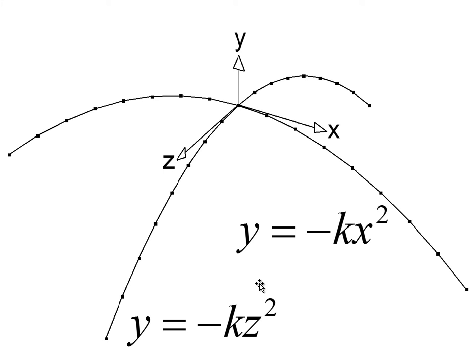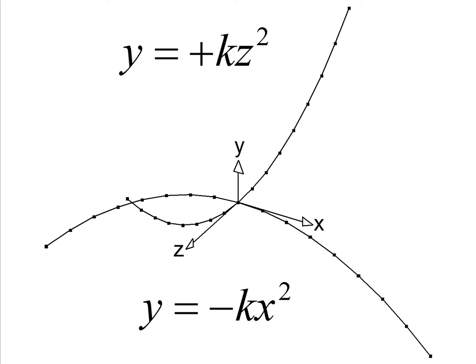The parabola y equals minus kz squared can be mirrored about the y equals zero point. In other words, we can flip it upward and the new equation that governs that is y equals plus kz squared. So we sometimes say this parabola opens upward, and this parabola opens downward.